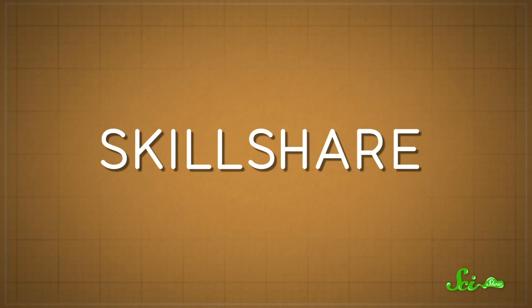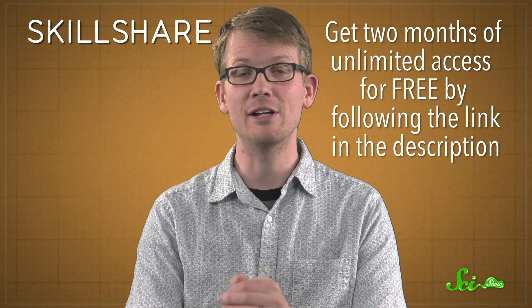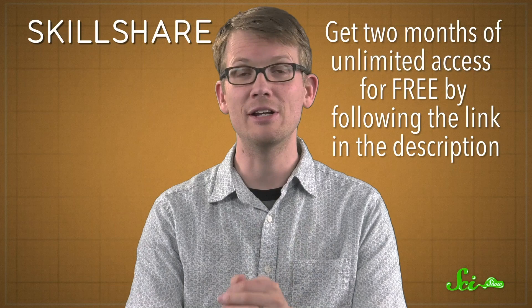And speaking of trials, Skillshare is offering SciShow viewers a trial that gives you unlimited access to all of their classes. They have thousands that cover all kinds of topics, from creative skills to business skills, technology, crafts, and cooking. Our friends at Kurzgesagt even have a multi-part course on motion graphics that is awesome. We've talked about that course before, but recently they released Part 3, where they go more in-depth into their style of character animation, so check it out. If you follow the link in the description, you can explore Skillshare for two full months for free. Thank you for supporting SciShow.